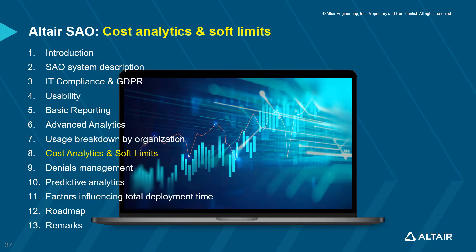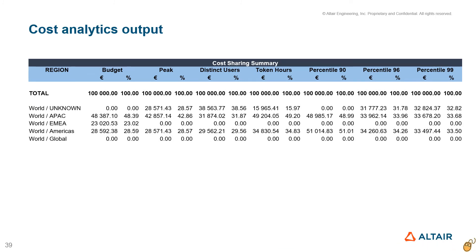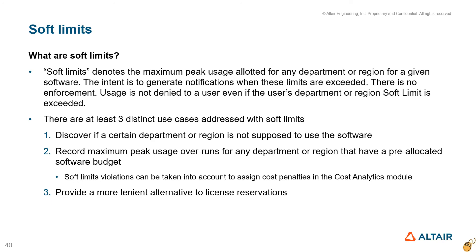For cost analytics, users fill in the cost analytics setup form. Costing can calculate cost sharing for a given vendor or a feature by region or by department. Users have the option of choosing one or multiple usage metrics for calculating shares. The cost analytics module creates an Excel file with cost sharing information, which can be modified further for incorporation into corporate costing systems. Admins can also set up soft limits indicating maximum allotted peaks for any or all departments and regions, with violations recorded and notifications sent to admins.